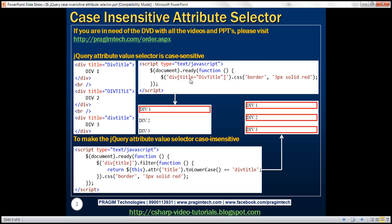Look at the jQuery code here. This is basically telling: find all the div elements which have got the title attribute, and the value of the title attribute must be equal to 'div title'. For all such div elements, we want to include a 3 pixel solid red border. When we execute this code, we get a red border only around the first div element, but not around the second or third div.